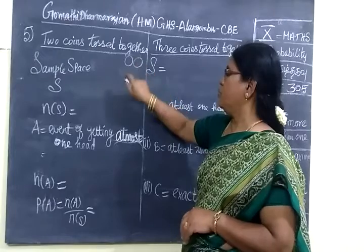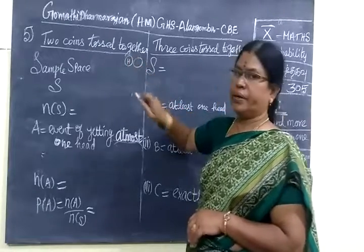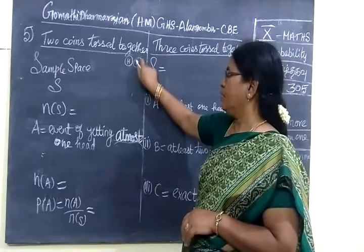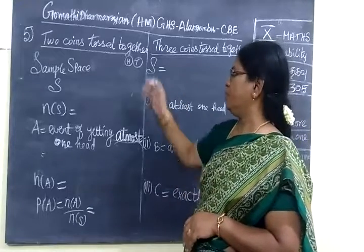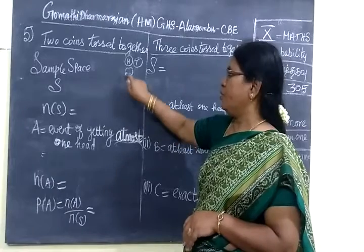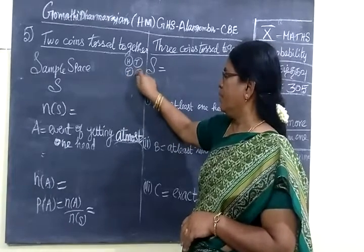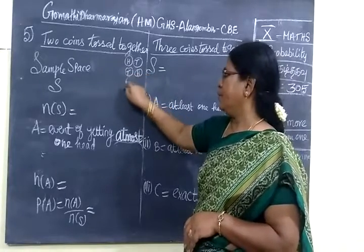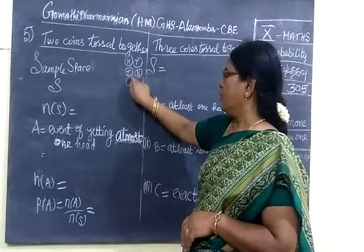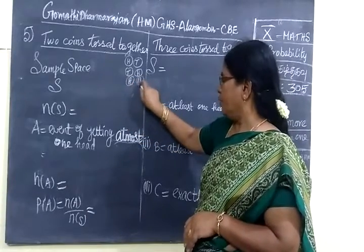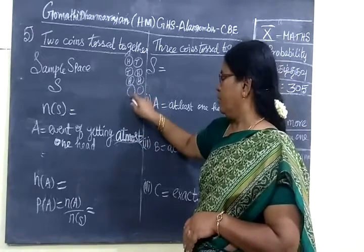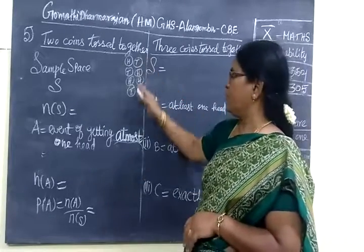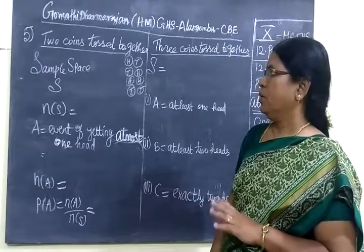So when we toss two coins, in the first coin we can get heads, in the second coin tails. It may be the first chance. Then next time when you toss, here tails, here heads. First coin tails, second coin heads. Then third time when you toss, here tails, the second coin also tails. Then fourth day, first coin tails, second coin also tails. So these four chances only are coming when you toss two coins.